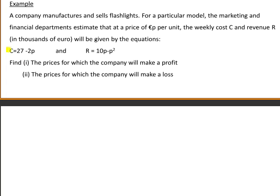The cost c is equal to 27 minus 2p, and revenue r is equal to 10p minus p squared. Part one of the question asks us to find the prices for which the company will make a profit.